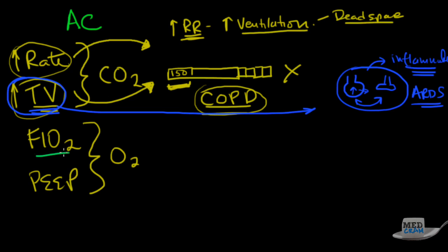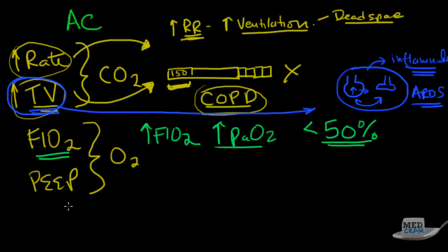Now, what about oxygen? FiO2 is pretty self-explanatory. Obviously, the higher the FiO2, the higher the PaO2 is going to be. We like to have it, if you can, less than 50% because FiO2 is greater than 50% can cause bronchitis in the ICU.